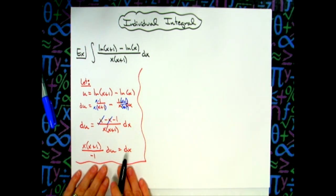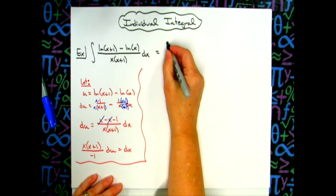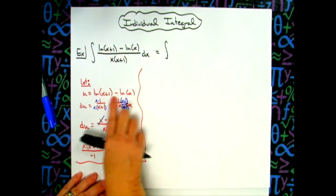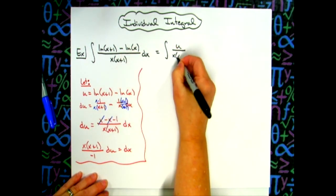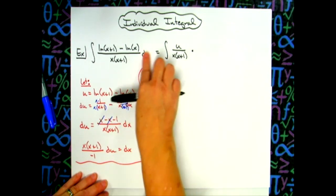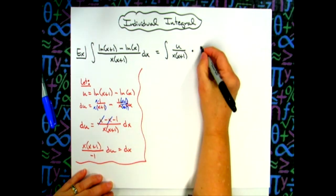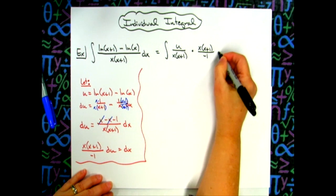Now, once you get down to there, then now you're going to come back up there to that integral and we're going to start replacing things. So we'll have the integral. That numerator is going to get replaced with u. I'm going to keep the denominator, so x times x plus 1. I'm going to replace my dx with what it equals, which is the x times x plus 1 all over the negative 1 and then du.